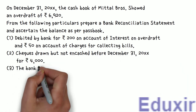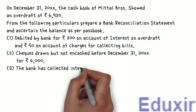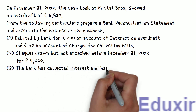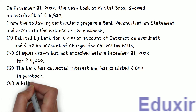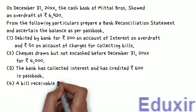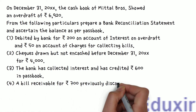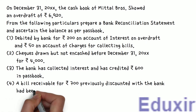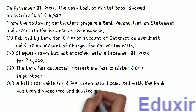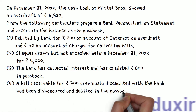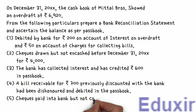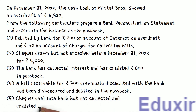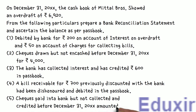3. The bank has collected interest and has credited 600 rupees in the passbook. 4. A bill receivable for 700 rupees previously discounted with the bank has been dishonored and debited in the passbook. 5. Checks paid into bank but not collected and credited before December 31, 2000+, amounted to 6,000 rupees.